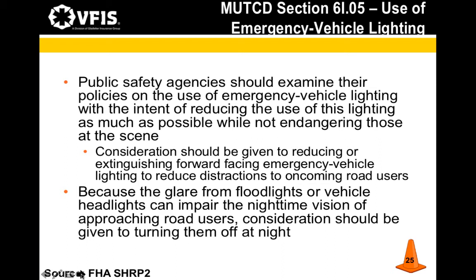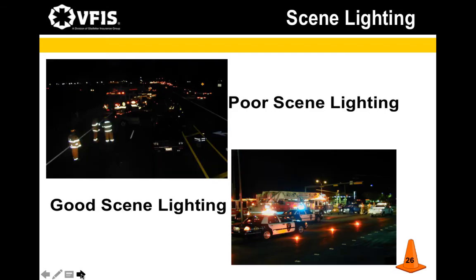To support the recommendations in the manual, agencies should consider installing day/night or high-low power switches on LED and strobe bars. That said, we don't want our scenes to be under-lit. An example of poor scene lighting shows little more than reflective bunker gear and a couple of brake lights. The better example shows traffic control devices properly used and vehicles well-lit, but not overbearing or glaringly bright.